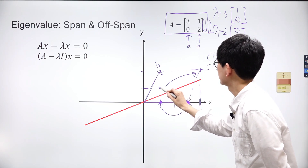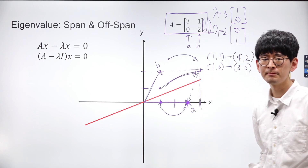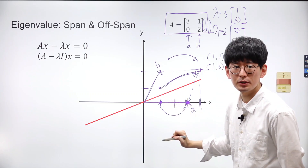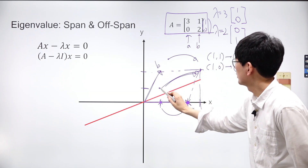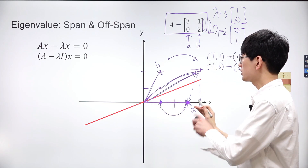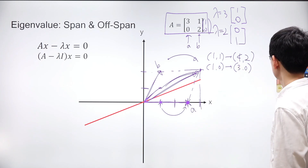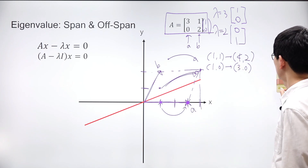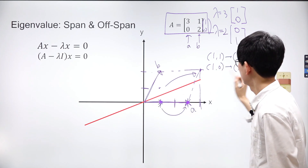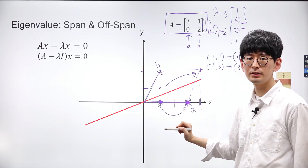There's something important to pay attention to here. Some vectors on the plane will remain on the same line even after their coordinates have been shifted by a matrix. Let's see which vectors behave like this. For example, the vector (1, 0) has been shifted to (3, 0), and both vectors lie on the same line with the same direction.